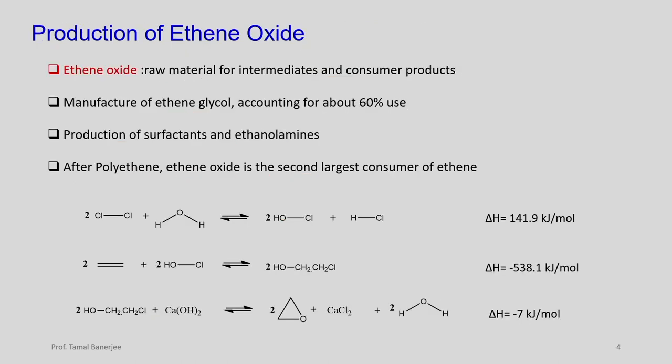Ethylene oxide is a raw material for intermediates and consumer products. About 60% of its use is for the production of ethylene glycol. It can also be used for surfactants and ethanolamines. After polyethylene, ethylene oxide is the second largest consumer of ethylene as a raw material.